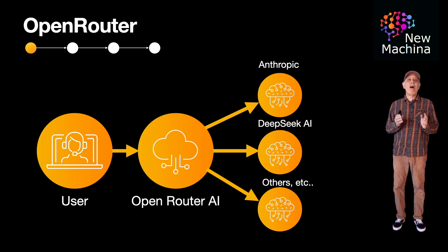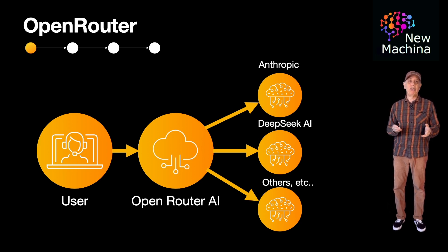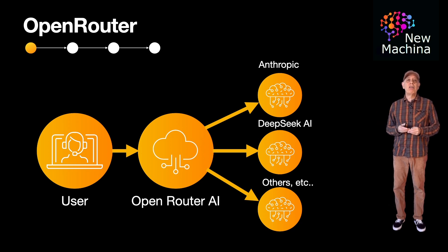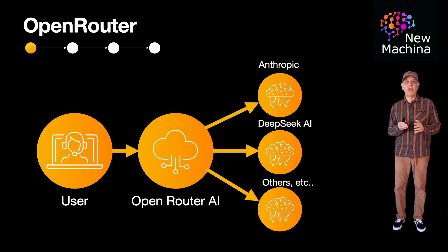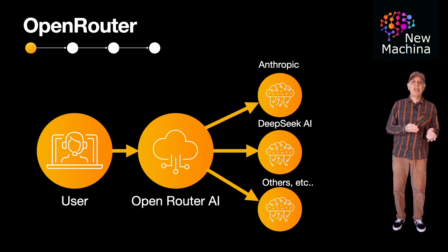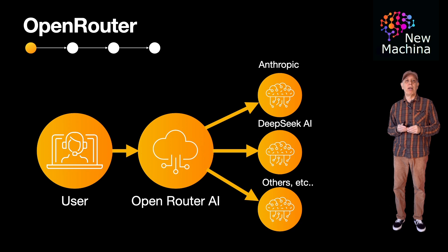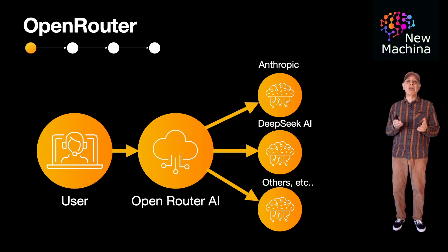OpenRouter provides access to models from providers such as OpenAI, Anthropic, DeepSeek, and many others. In this video, I'm going to show you how easy it is to integrate first with Anthropic Claude Sonnet 3.7, and then DeepSeek R1. As part of this, I will show you how easy it is to swap out LLMs. Switching between LLMs will literally take less than 30 seconds.